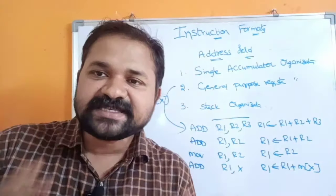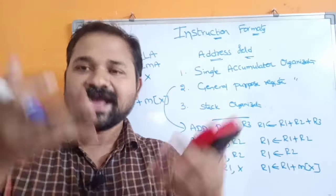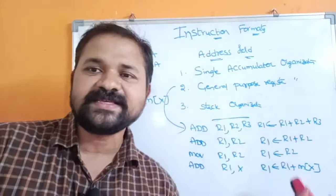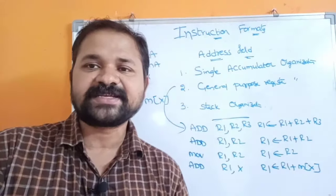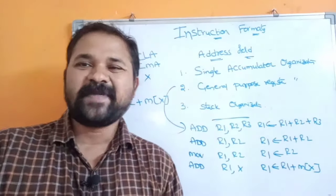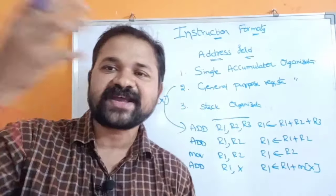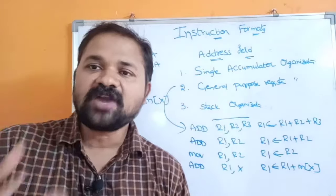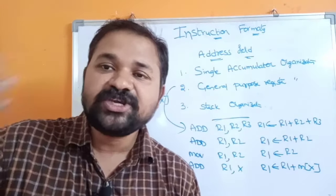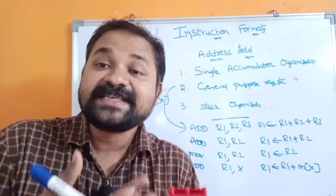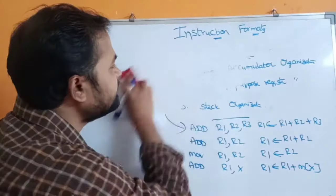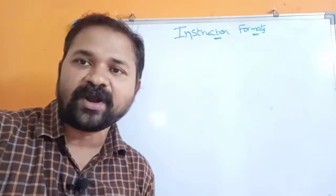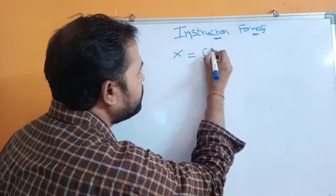The next organization is stack organization. In stack organization we use instructions like PUSH, POP, and for arithmetic operations, instructions like ADD, SUB, MULTIPLY. These are zero address instructions. Based upon the number of addresses, we can classify instructions into five types: three-address instruction, two-address instruction, one-address instruction, zero-address instruction, and RISC instruction.